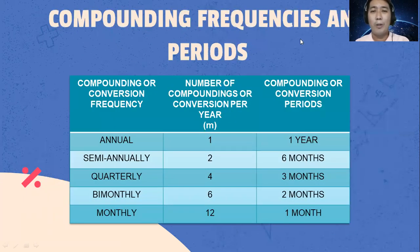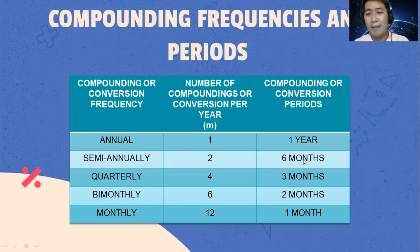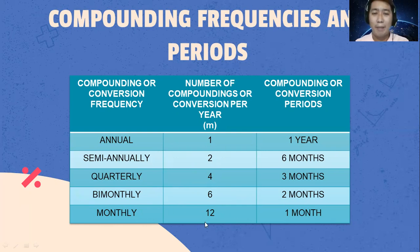These are the compounding frequencies and periods. For annual, we have 1 compounding per year. Semi-annual has 2 compoundings per year, every after six months. Quarterly has 4 compoundings per year. Bi-monthly has 6 compoundings per year. Monthly has 12. Please remember this table.